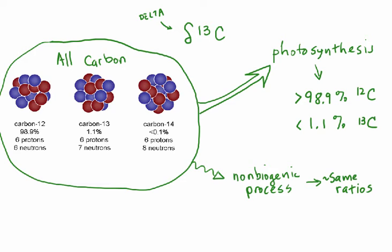We also use delta-13C to detect events that caused changes in the Earth's atmosphere, and this is frequently associated with mass extinctions. There is in fact a negative carbon-13 excursion going on right now—carbon in the atmosphere has less carbon-13 than we'd normally expect—and this is due to the widespread combustion of fossil fuels by humans. All of the carbon content of coal and petroleum is of biological origin and is rich in carbon-12 and relatively poor in carbon-13, so by burning fossil fuels we're putting an abundance of 13C-poor carbon into the atmosphere, resulting in a negative 13C excursion.